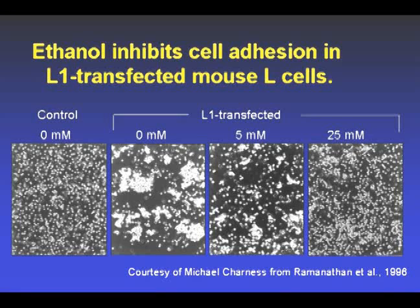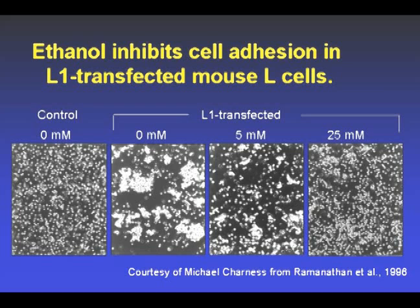Ethanol seems to alter cell responses to molecules that regulate neuronal proliferation, migration, and differentiation. One interesting mechanism involves L1 and other cell adhesion molecules. These are essential for normal human nervous system development. L1 and other cell adhesion molecules guide neuronal migration and tract formation during nervous system development, and mutations in the gene for L1 result in brain malformations.